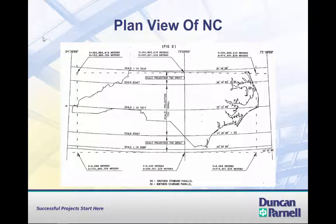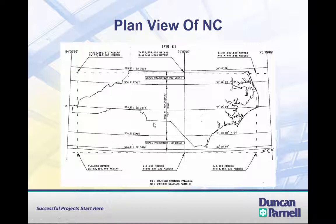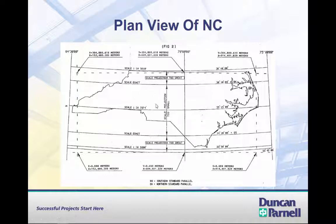Here we see a plan view of North Carolina with the state plane system overlaid on it. It's an east-west system, with the center of the system running east-west. We have what are called standards of parallels — where the rounded mathematical model of the earth, the ellipsoid, crosses the grid system or the flat plane. In between those standards, the projection is too small, so we use a scale factor smaller than 1 to go from the ellipsoid down to the grid. Outside those standards, the projection is too great, so we use a scale factor bigger than 1.